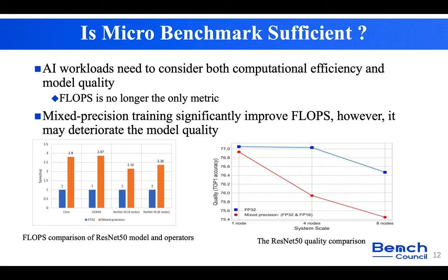Let's first look at micro benchmarks. For AI micro benchmarks like a single convolution layer or fully connected layer, there is no accuracy information. However, accuracy is one of the most important metrics for AI workloads, so FLOPs is no longer the only metric.